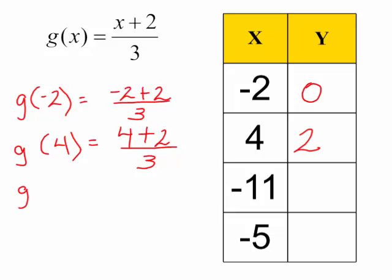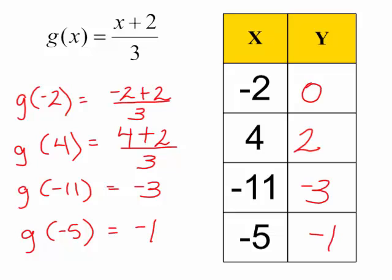g at negative 11, that will be negative 9 over 3, which is negative 3. And the last one, g at negative 5, that will be negative 5 plus 2, which is negative 3 over 3, which is negative 1.